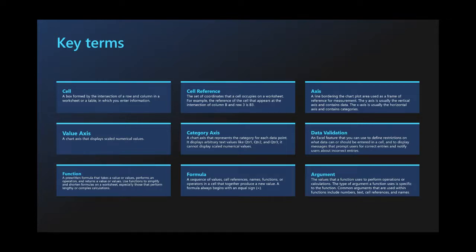Data validation is a system where you can set rules for specific cells, especially useful when working with multiple people on the same document. Data validation allows you to set it up so that specific cells can only have a certain kind of data — for example, only numeric values, no decimal points, only positive numbers. That way you're always getting valid data in certain areas, especially if you're using formulas in that particular table.